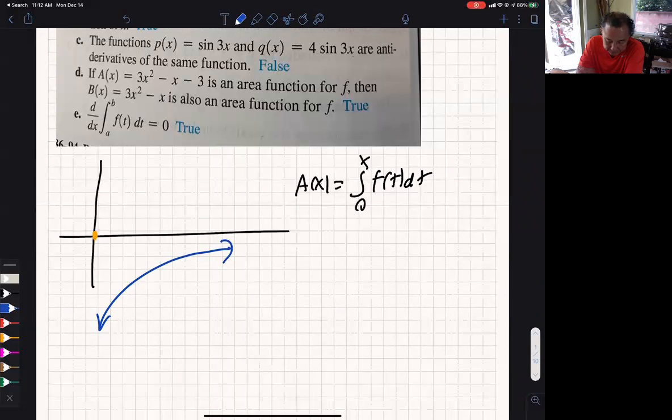Again, we start at zero. That's not the right color. We start at zero because if you integrate from here to here, you're adding nothing. The area under the curve from there to there is zero. There's nothing to add. But once you move over a little bit,